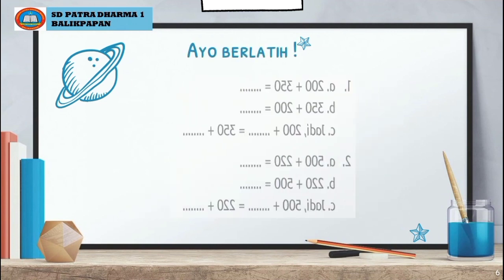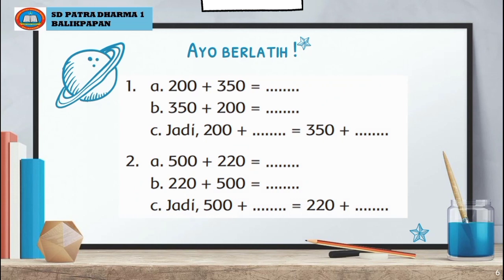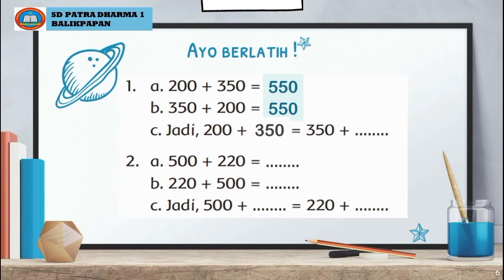Ayo berlatih! Ada dua soal ya anak-anak. Nomor 1 bagian A: 200 ditambah 350 hasilnya adalah 550. Bagian B: 350 ditambah 200 hasilnya sama yaitu 550. Bagian C: jadi 200 ditambah 350 sama juga dengan 350 ditambah 200.